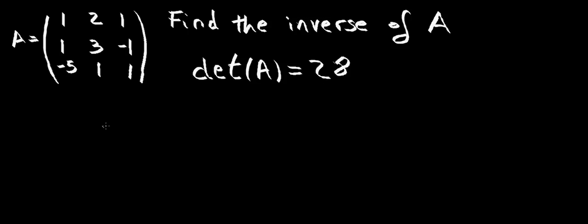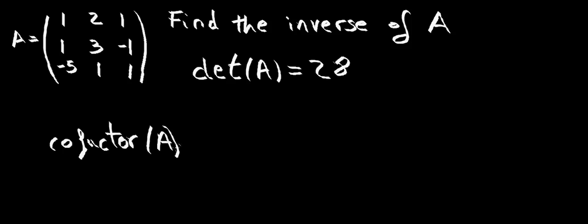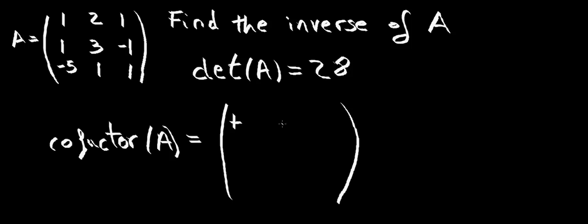Now for the adjoint method we're going to start calculating the cofactor matrix of A. That cofactor matrix of A is going to be the 3x3 matrix that we get when we calculate the minors of each of the elements in the matrix with their corresponding sign. I'm going to write the sign convention.